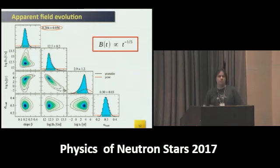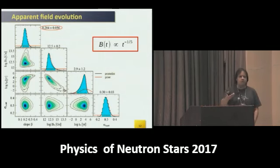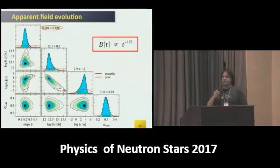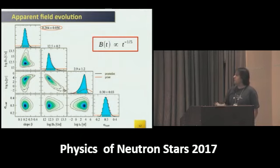This is the result of the fit, and this is the posterior distribution for the slope beta. You see it's far from zero, quite significantly. It equals 0.5, meaning apparent magnetic fields decay for radio pulsars as B proportional to T to minus one-fifth. It's a quite gentle decay, not very steep, but quite significant.